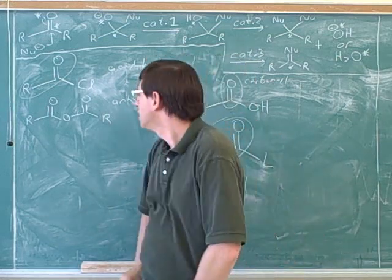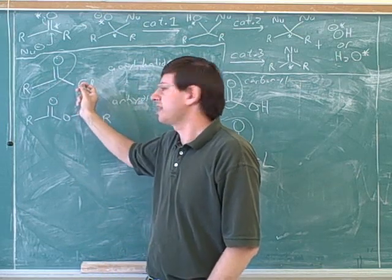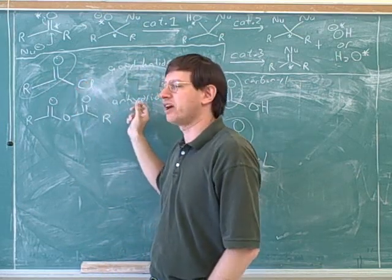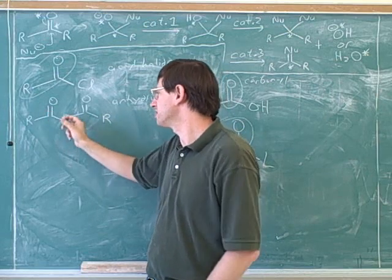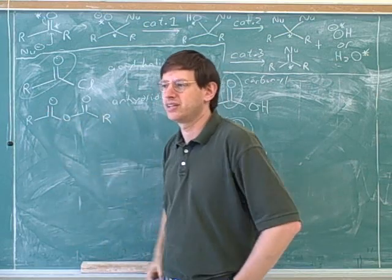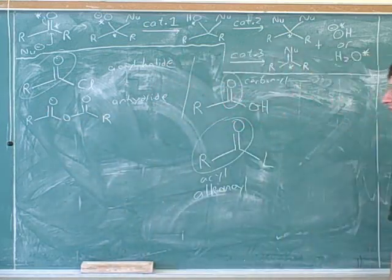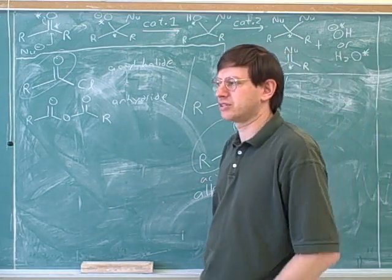So what is an acyl halide? It's a carbonyl connected to a halogen. What is an anhydride? It's two carbonyls connected by an oxygen, basically. The basic element of anhydride is two carbonyl carbons connected by an oxygen.